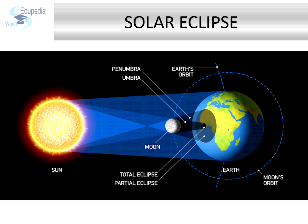On the other hand, when the Moon is exactly on the plane of ecliptic, we see a total solar eclipse. The occurrence of a solar eclipse can range from one to five times in a calendar year. Unlike a lunar eclipse, a solar eclipse can be viewed only from a relatively smaller part of the Earth and it lasts generally for only a few minutes.